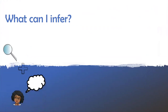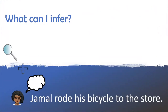Did you make your inference? Based on the clues as well as what I already know, I am going to infer that Jamal rode his bicycle to the store. Awesome thinking, boys and girls! You put the clues with what you already knew in your head and you came up with a good guess or a good inference.